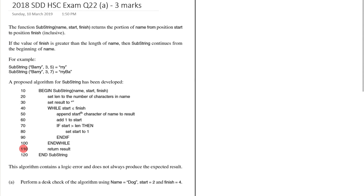This algorithm contains a logic error and does not always produce the expected result. We need to perform a desk check of the algorithm using the values: name = 'dog', start = 2, finish = 4. Let's draw up a table for this desk check and list all variables at the top of each column.